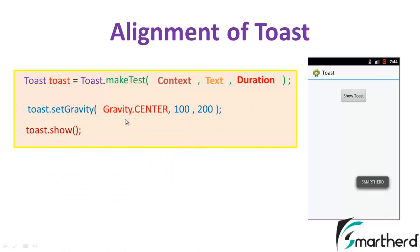Now suppose we write like this, Gravity.CENTER. So our center point of the screen is this point and we are moving 100 units in the x-axis and 200 units in the y-axis. So 100 and 200. So we are able to print our Toast message right here.